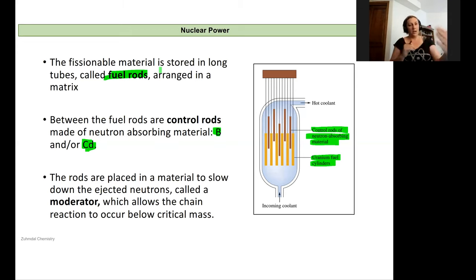The rods are also placed in a material—a coolant or moderator. It's trying to slow down the ejected neutrons as a way to control the fission process, keeping it below the critical mass of the chain reaction. The moderator and the control rods are helping to control this chain reaction of fission that's occurring in the uranium fuel cylinders or rods.